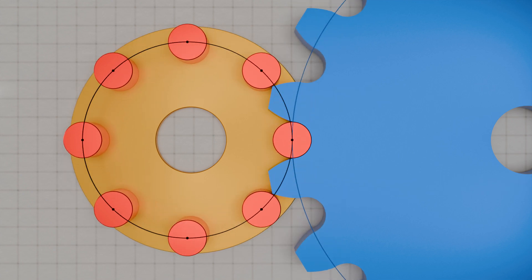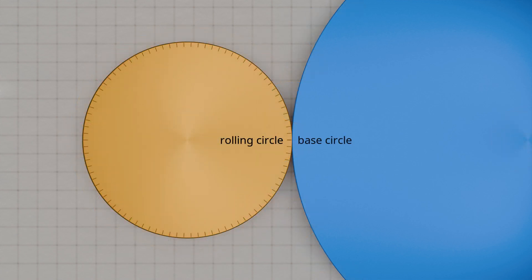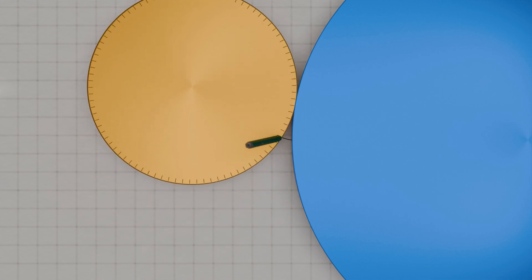As is usual with cycloidal gears, the tooth profile is created by rolling a circle on a base circle. The base circle corresponds to the pitch circle of the gear and the rolling circle corresponds to the pitch circle of the pinion. The resulting trajectory during rolling describes the shape of the cycloid.